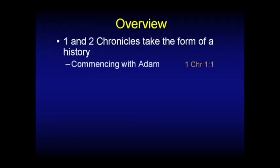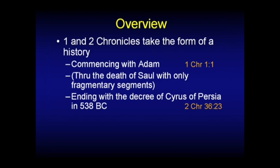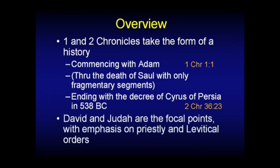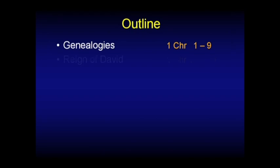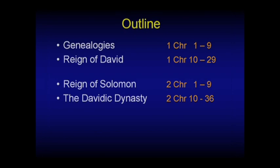Chronicles takes the form of a history. They commence, strangely enough, with Adam, as you probably discovered when we went through chapter 1 wading through those genealogies, all the way through the death of Saul. They finally end — 2 Chronicles ends — with a decree of Cyrus of Persia when Babylon is conquered and they're released to go back home, when the exile is over. So this takes us all the way through to the exile. David and Judah are the primary focal points, with a lot of emphasis on the priestly and Levitical aspects, which is why you can view it as a religious history of the southern kingdom. The first nine chapters cover genealogies; the rest of 1 Chronicles deals with the reign of David in chapters 10 through 29.